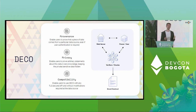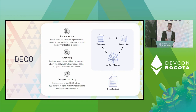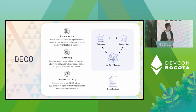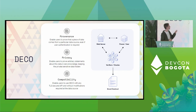They don't even need to know that Deco is being used to prove something. If you look at how hard it is to get the internet migrated to IPv6, you know that protocol upgrades are very difficult. So it's a game changer that this works with the existing Web 2.0 ecosystem without requiring modifications on the part of the web server or the user.